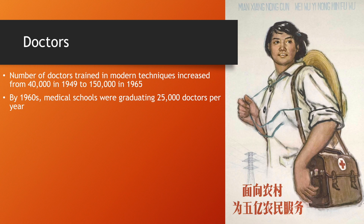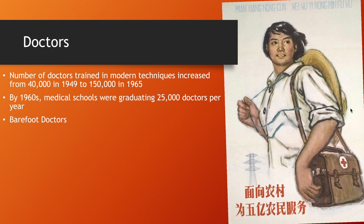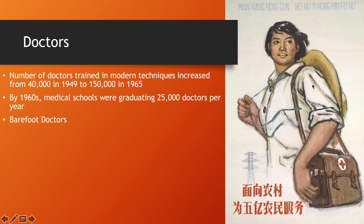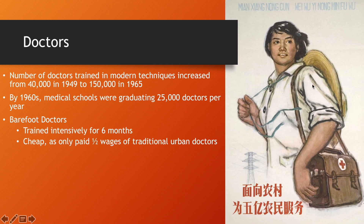So, what Mao did is he created the Barefoot Doctors Initiative. They were trained intensively for six months, receiving very basic health care training. The good thing was they were cheap for the government, which could not afford to divert funds away from its ambitious plans like industry and the military.